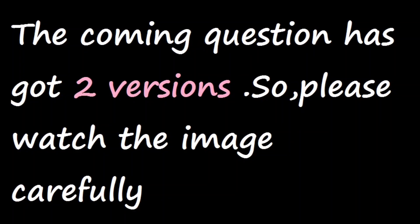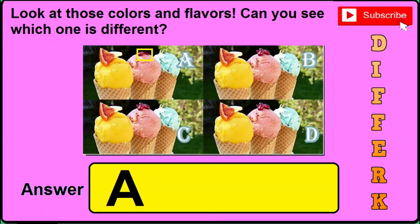This coming question also has two different versions, so watch the image carefully and click the answer shown. In version 1, if you find this sort of image, the correct answer will be A — just click A in the answer box.